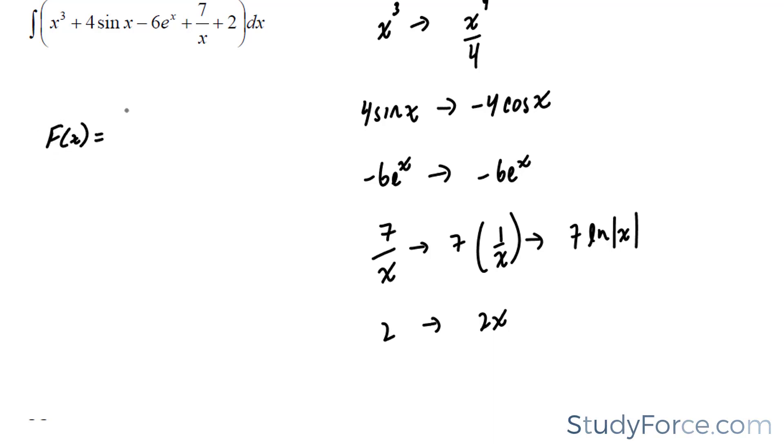x to the power of 4 over 4, minus 4 cosine x, plus 2x. And don't forget the most important part, the plus c.